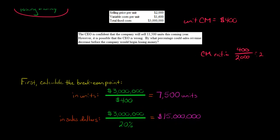So here's what this means. This company sells 7,500 units, it breaks even. Or you could think about it if it does $15 million in sales revenue, it breaks even. They mean the same thing. They're just expressed in different ways.